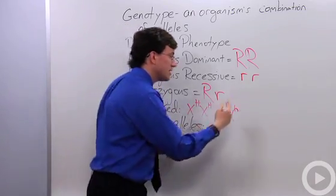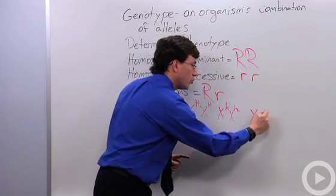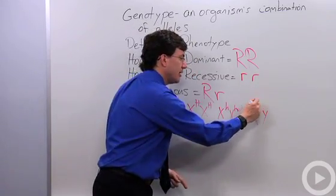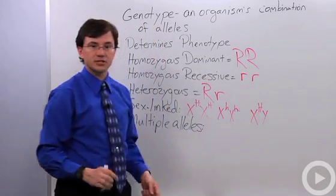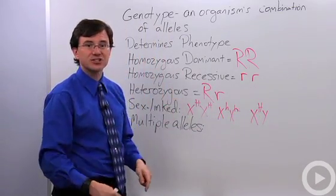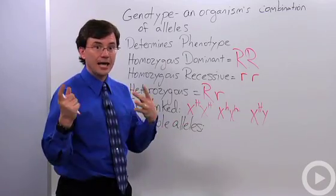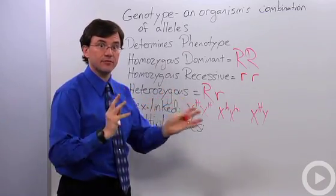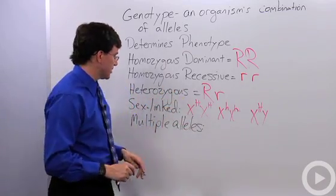Males, on the other hand, because they only have one X chromosome and a Y, they can only have one copy. So their genotype, instead of being called homozygous or heterozygous, is called hemizygous. Hemi meaning half, so only half of the chromosomes came together in that case.